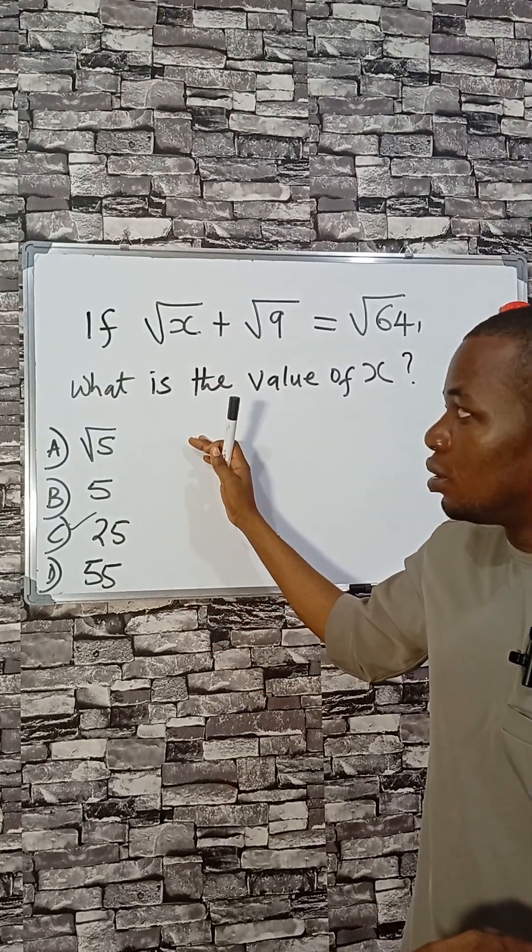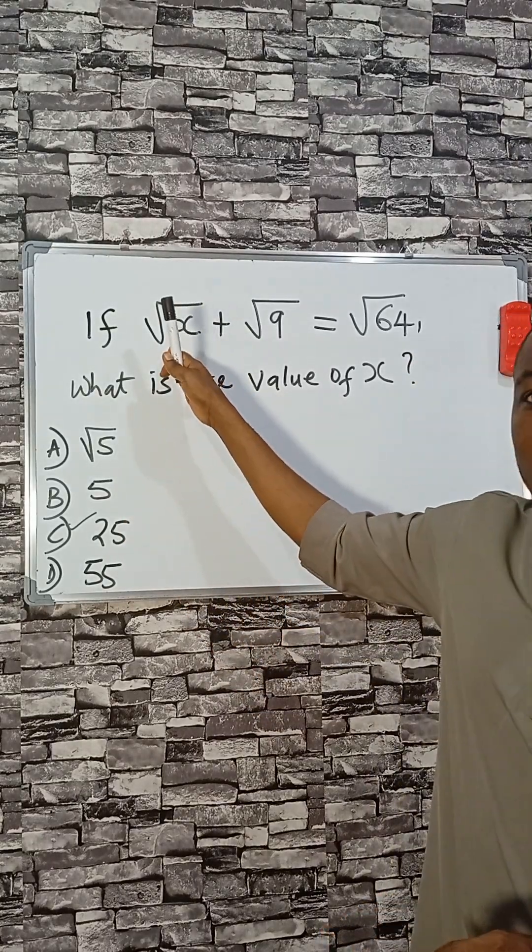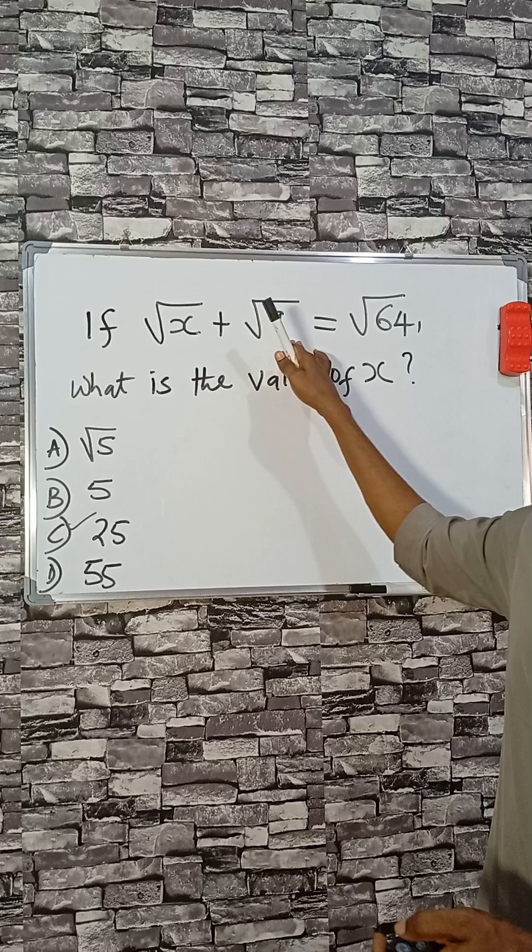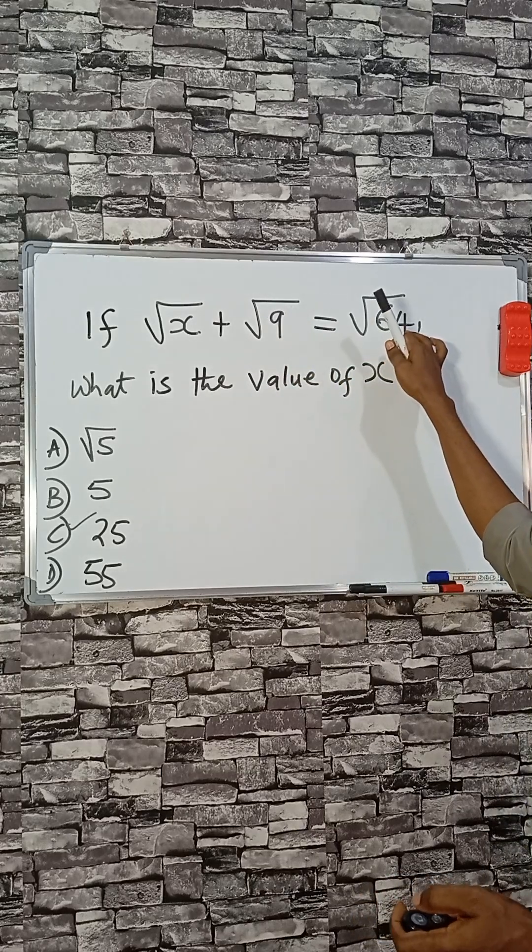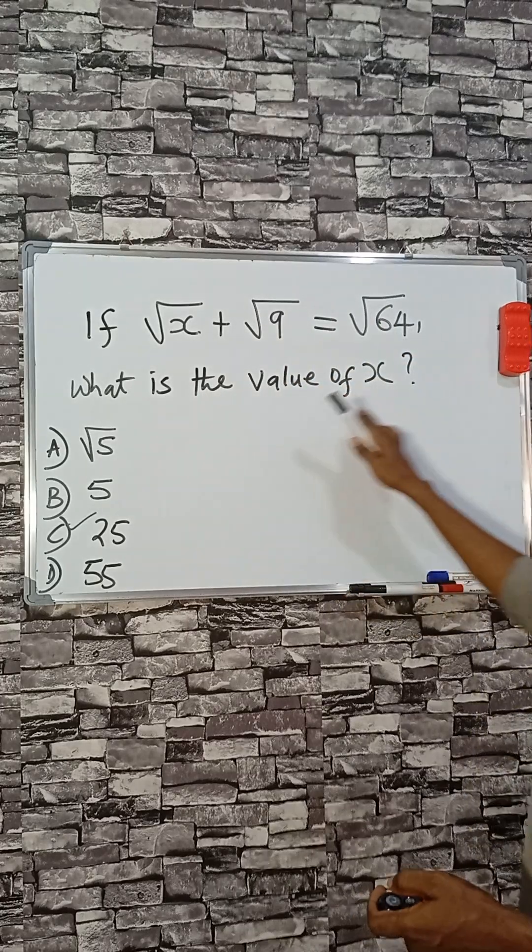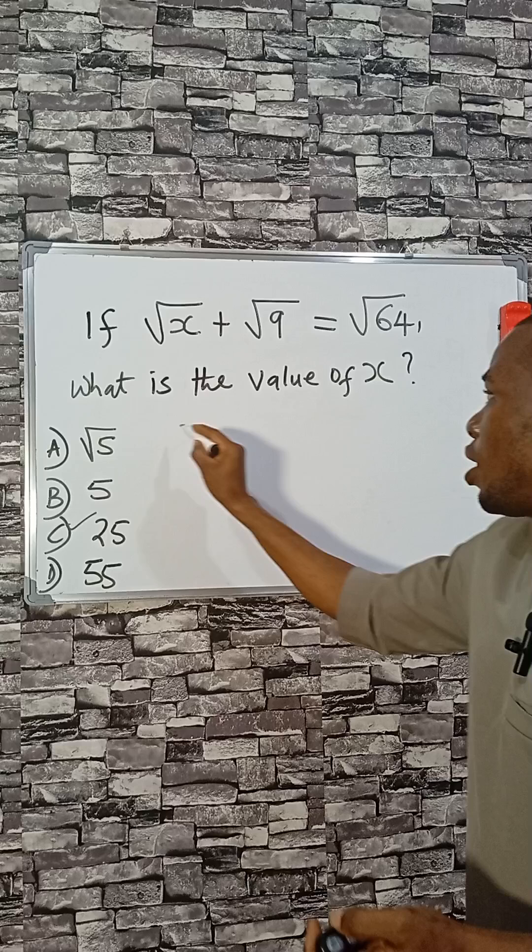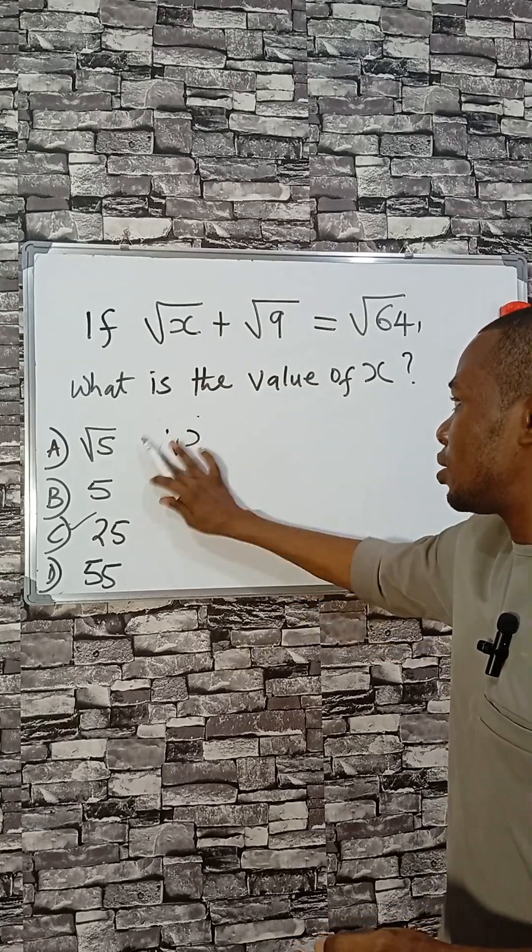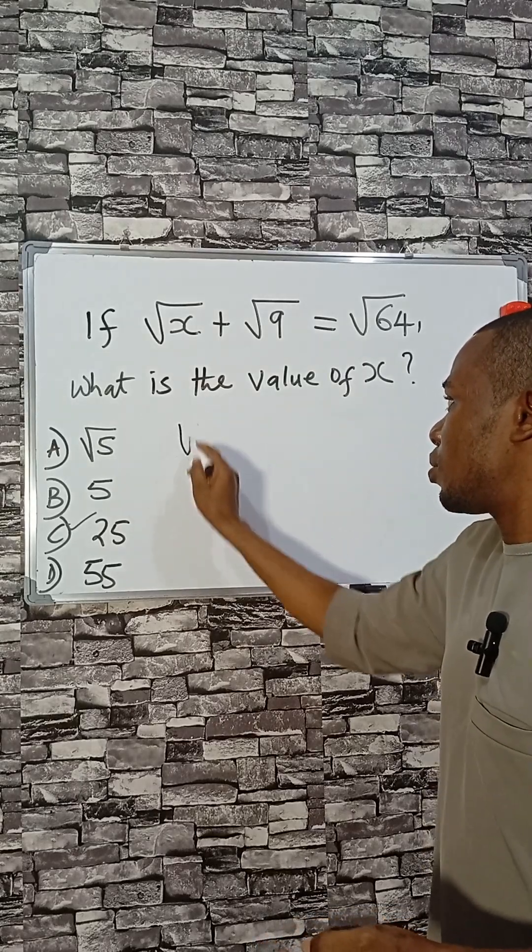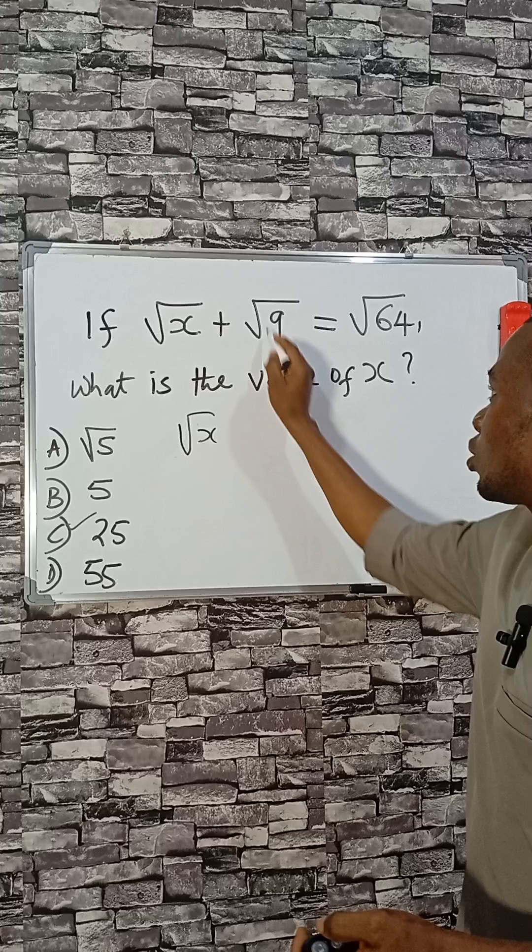How would you solve this ACT question? Given that square root of x plus root 9 equals square root of 64, what is the value of x? Very simple. Square root of x, square root of 9...